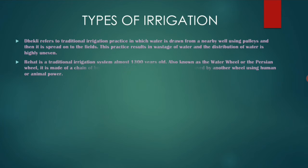Next comes Rahat. Rahat is based on the lever system, and water is retrieved from a well using oxen. It requires a large well with a wheel which is turned by animals.